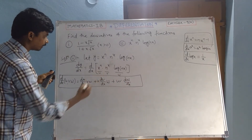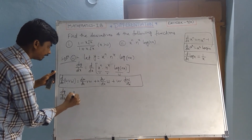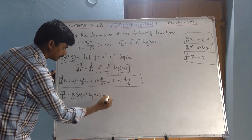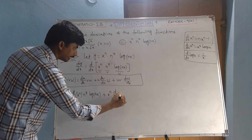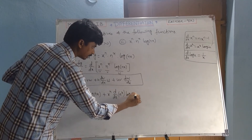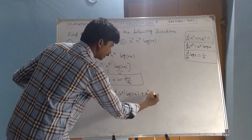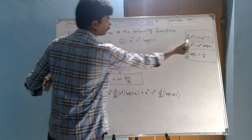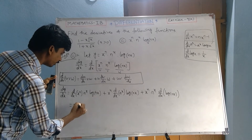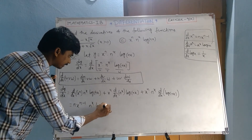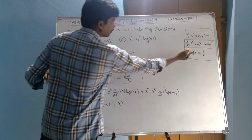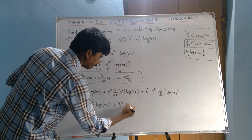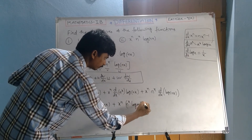So dy/dx equals: d/dx of x to the power of n times n to the power of x times log nx, plus x to the power of n times d/dx of n to the power of x times log nx, plus x to the power of n times n to the power of x times d/dx of log nx. Now d/dx of x to the power of n equals n times x to the power of n minus 1. And d/dx of a to the power of x equals a to the power of x times log a — so here replacing a with n, we get n to the power of x times log n times log nx.